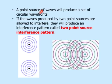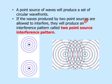A point source of waves will produce a set of circular waves. The source is like a little point — that's why it's called a point source — and it produces a whole lot of circular waves. If the waves produced by two point sources are allowed to overlap each other, they will produce an interference pattern called a two-point source interference pattern. When these two sets of waves interfere, this is the pattern you get.